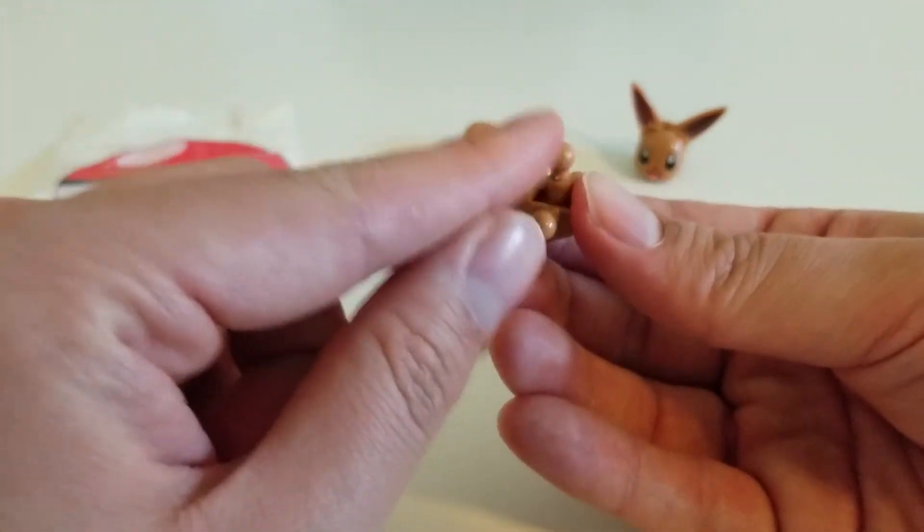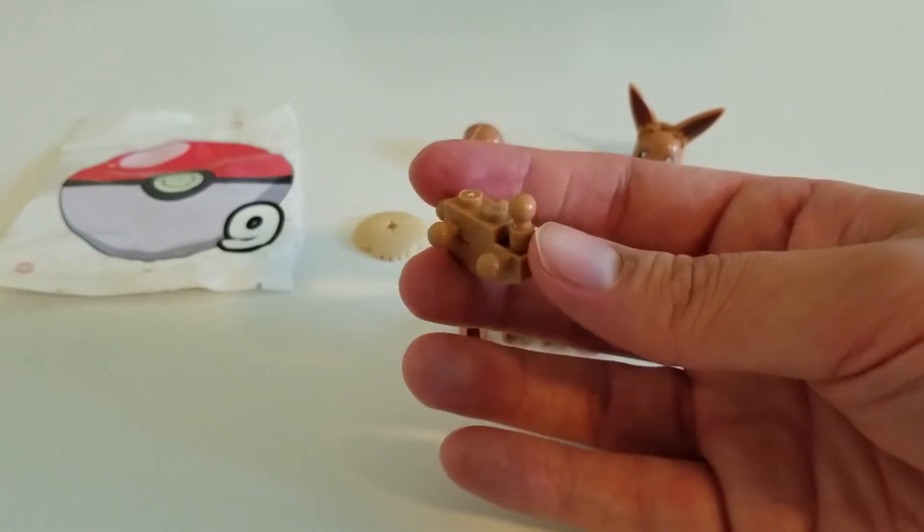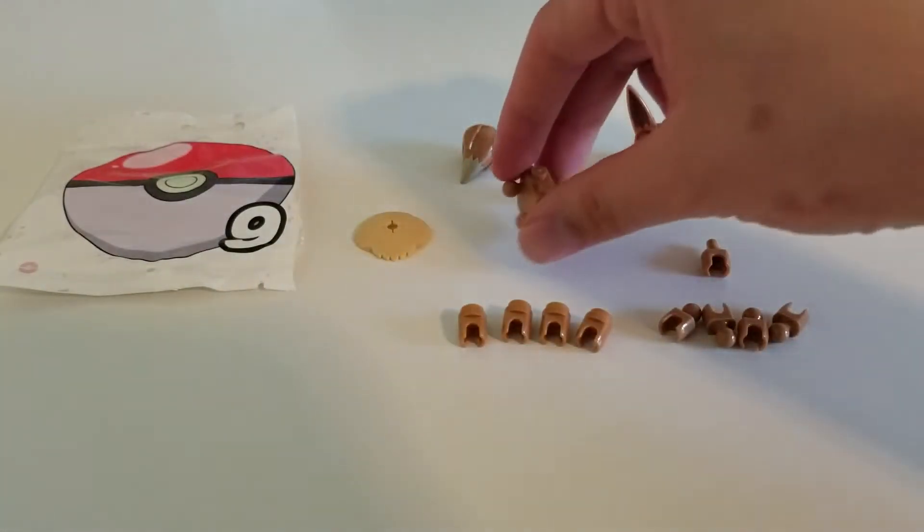There we go. So, now there's a joint for the head, tail, and four legs. So, we'll go ahead and do that. We'll set the body down.